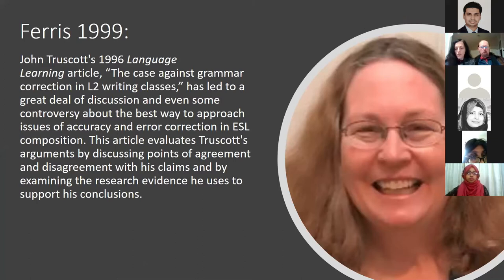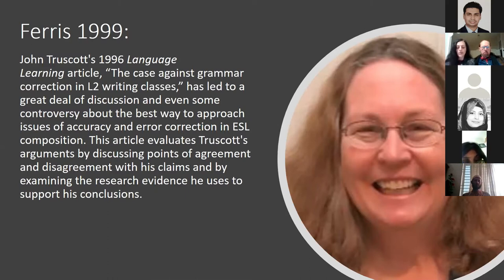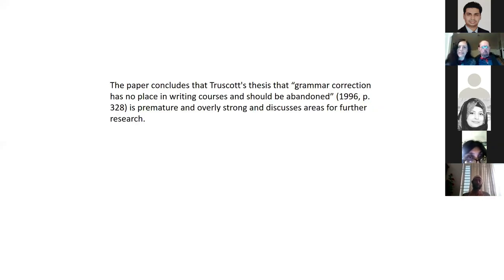John Trascott's 1996 Language Learning article 'The Case Against Grammar Correction in Second Language Writing Classes' led to a great deal of discussion and controversy about the best way to approach accuracy and error correction in ESL composition. This article evaluates Trascott's arguments by discussing points of agreement and disagreement with his claims and by examining the research evidence he uses to support his conclusions. The paper concluded that Trascott's thesis — that grammar correction has no place in writing courses and should be abandoned — was overstated.